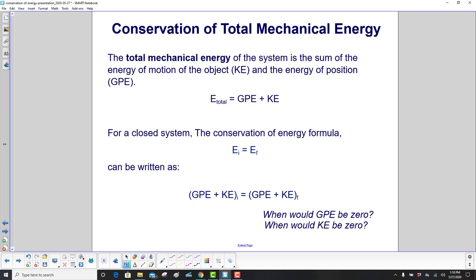Conservation of total mechanical energy. Total mechanical energy, we defined that earlier in the chapters. Total mechanical energy of a system will be the sum of the energy of motion of the object, the kinetic energy, and the energy of position, GPE, gravitational potential energy.